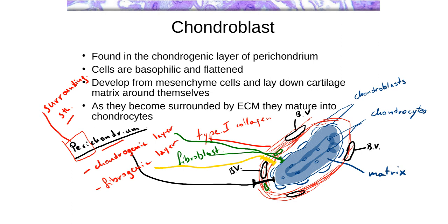Chondroblasts are fairly basophilic because they produce lots of proteins for export and therefore have abundant rough ER. They are somewhat flat on the surface of the cartilage. They develop from mesenchyme cells — the stem cells of connective tissue — and differentiate to start laying down cartilage matrix around themselves. When they become surrounded by matrix, they become known as chondrocytes.